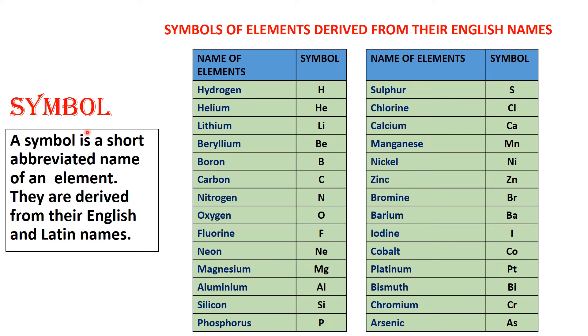Symbol. A symbol is a short abbreviated name of an element. They are derived from their English and Latin names. Students, symbols are the short form of elements. Now, the name of some elements are derived from their English names and some are derived from the Latin names.